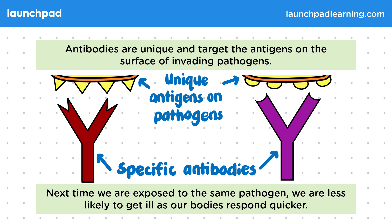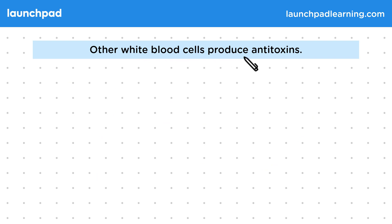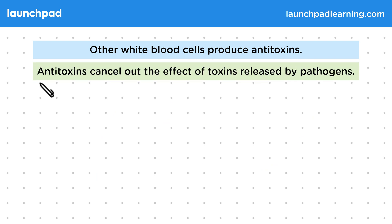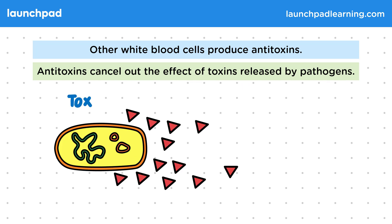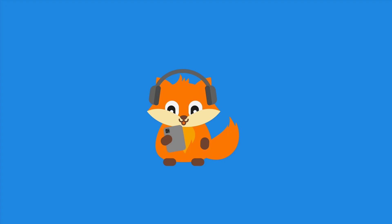Other white blood cells produce antitoxins. Antitoxins cancel out the effect of toxins released by pathogens — they bind with and neutralize any toxins that may be released by the bacteria. For the exam you should be able to describe the role of the immune system in terms of white blood cells helping to defend against pathogens by antitoxin production.